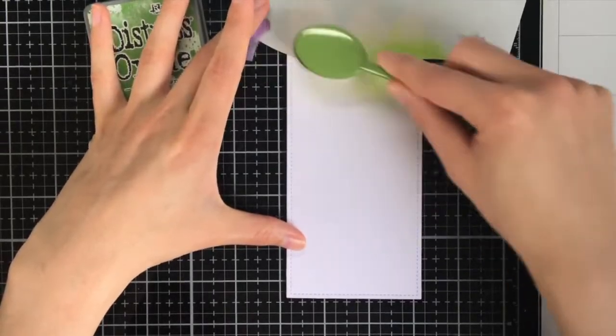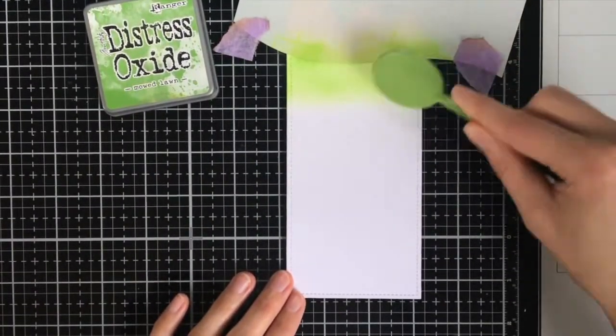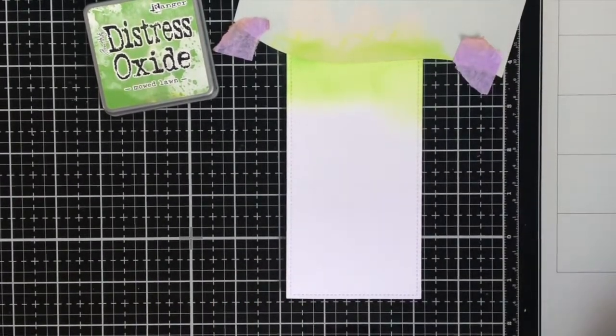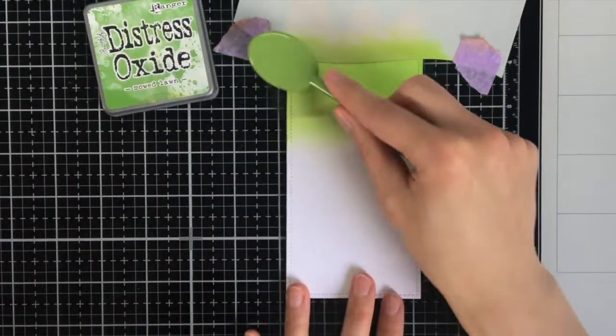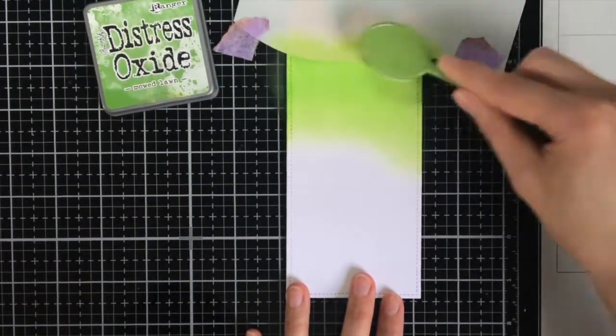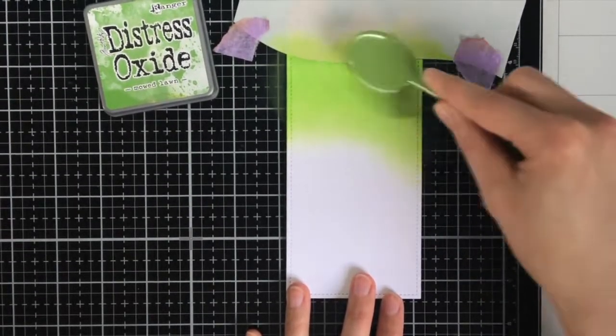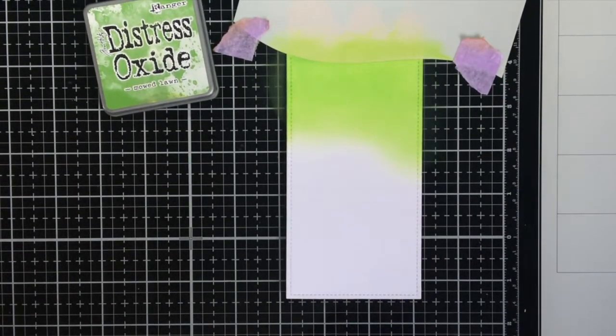And then I'm going to work on the grass and for this I'm using the Distress Oxide Ink Mowed Lawn. For the ink blending I love to use the brushes from Tailored Expressions. I used a lot of different brushes in the past but these are really my favorite.